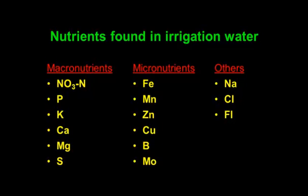Nutrients can also be found in the irrigation water itself. In general, with the macronutrients, you don't find very much N, P, or K, but you do find lots of calcium, magnesium, and sulfur. You do find some micronutrients — for example, boron, sometimes iron. And you get other salts — I call those junk salts — sodium, chloride, and fluoride.